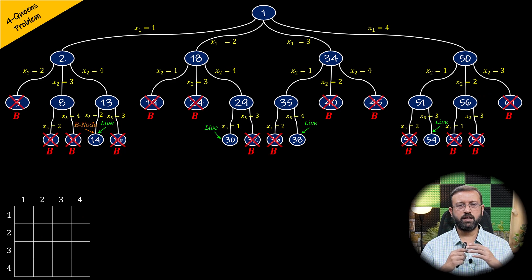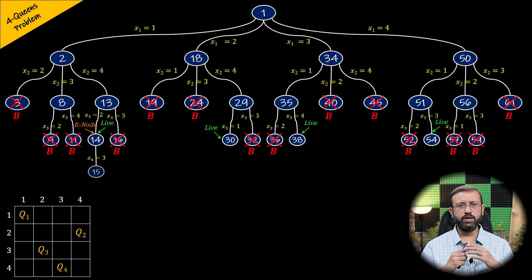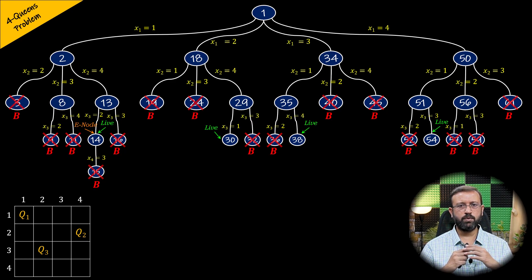Node 14 becomes the E node and is expanded. When queen 1 is in row 1 and column 1, queen 2 is in row 2 and column 4, and queen 3 is in row 3 and column 2, placing queen 4 in row 4 and column 3 gives x4 = 3 and node 15. Node 15 is immediately killed — queen 3 and queen 4 are on the same diagonal. All children of node 14 are generated.